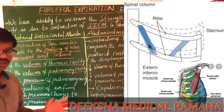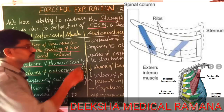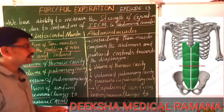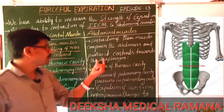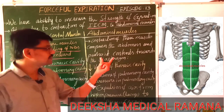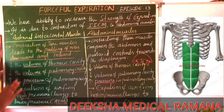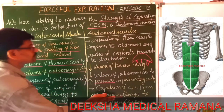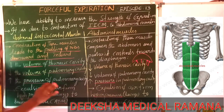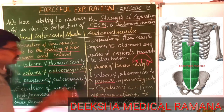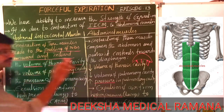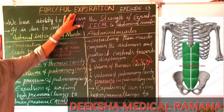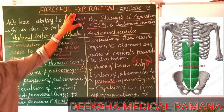The second muscle is the abdominal muscles. When the abdominal muscles contract, they compress the abdomen — the same process occurs as described for the internal intercostal muscles. So these two muscles, internal intercostal muscles and abdominal muscles, play a very important role in forceful expiration.